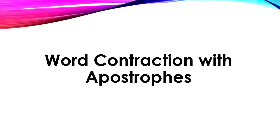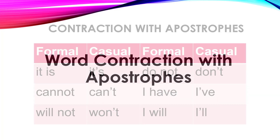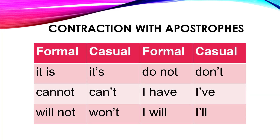What about contraction? This is the other use of apostrophes, just to double the confusion. Here I'm going to show you contraction in a table. Formal is to spell out 'it is'; casual is to use the contraction with an apostrophe: 'it's.' So you can say 'it is cold' or you can say 'it's cold.' Cannot becomes can't — notice where the apostrophe goes: N apostrophe T. That shows up a lot. Notice it shows up in won't and in don't, the contractions of 'will not' and 'do not.'